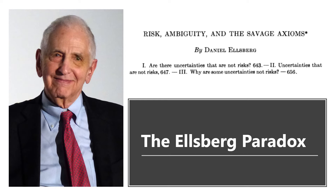He was considered by former US Secretary of State Henry Kissinger as the most dangerous man in America. After serving in Vietnam as a former Marine Corps officer, Ellsberg was convinced that the military strategy of the Vietnam War was doomed to fail. When he was an employee of the Department of Defense, Ellsberg leaked a 7,000-page document of a classified assessment of the Vietnam War in 1971. That document was known as the Pentagon Papers, which revealed that four administrations under four presidents — Harry Truman, Dwight Eisenhower, John Kennedy, and Lyndon Johnson — had purposely misled the public about the Vietnam War.